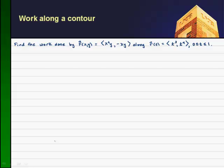So let's find the work done by the force field x squared y, negative xy, along r of t equals t cubed, t to the 4th, and t is between 0 and 1.